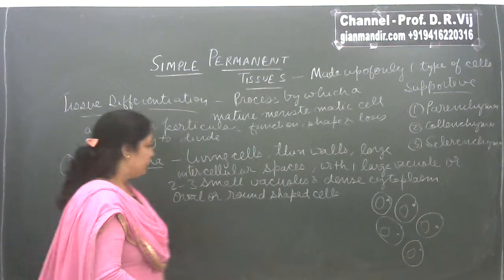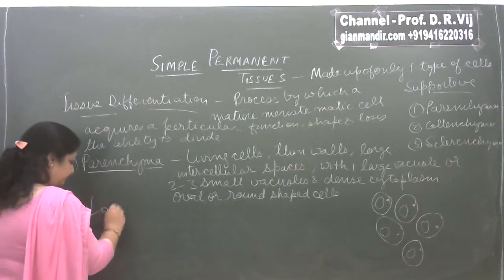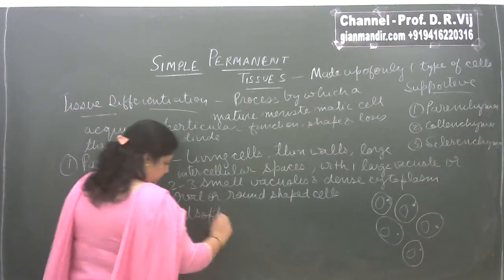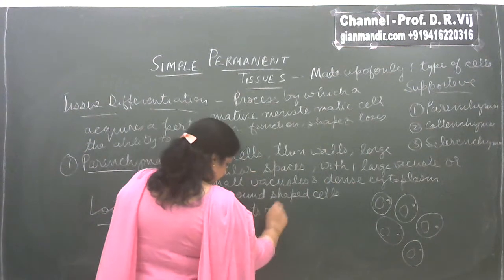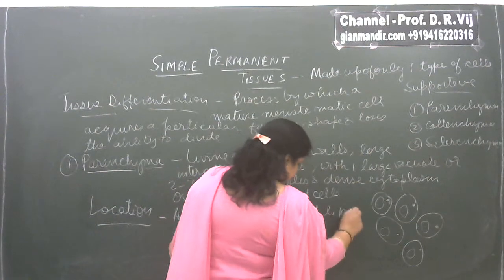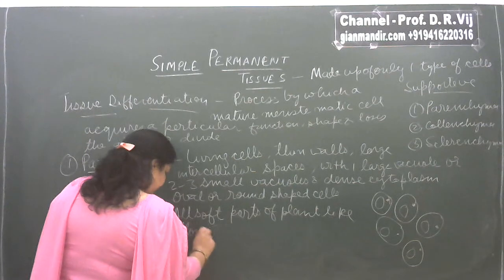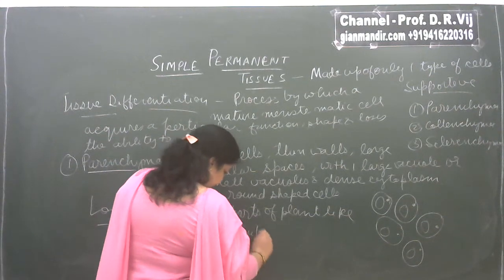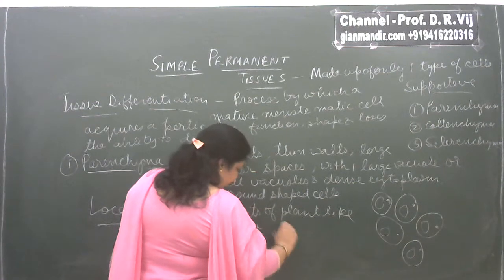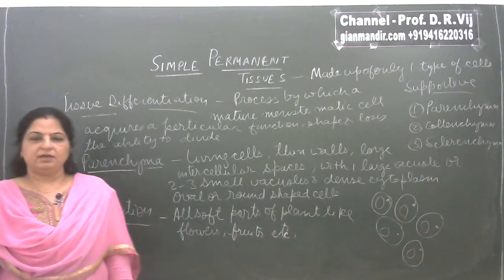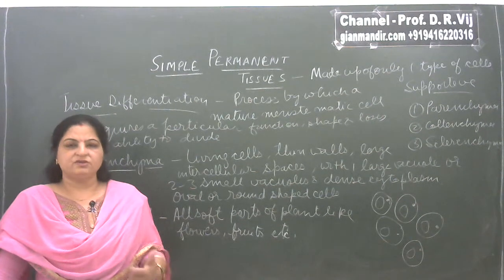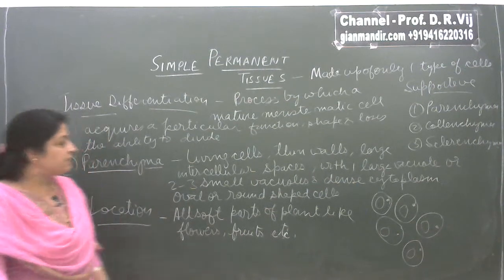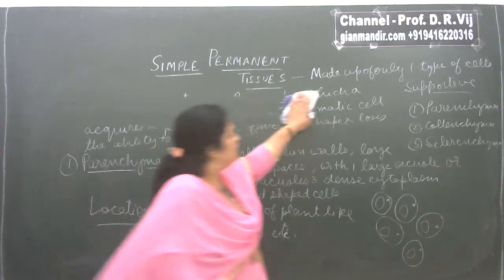If you look at the location of parenchyma, it is found in all soft parts of the plant — such as flowers, fruits, roots, and soft stems. You can observe parenchyma in any of the soft parts of the plant. In parenchyma, there is also some differentiation, giving rise to further modifications.